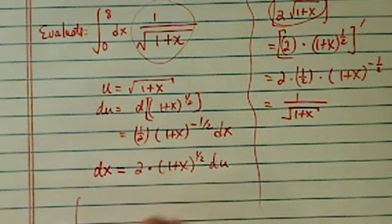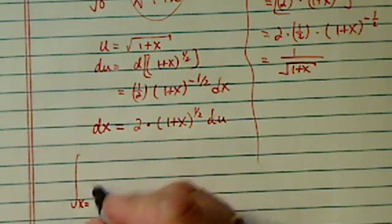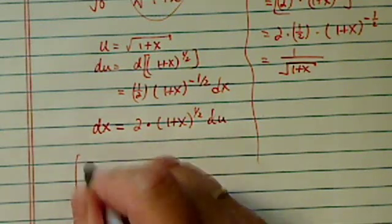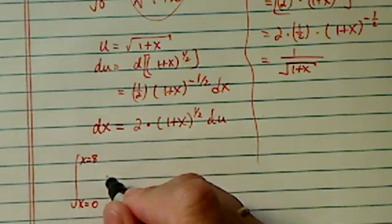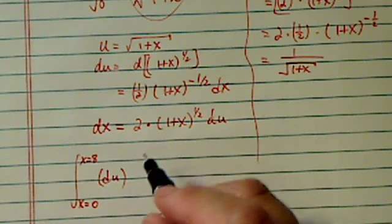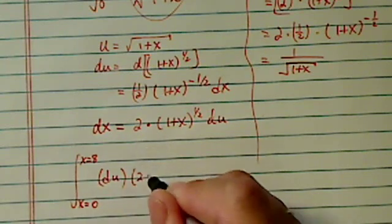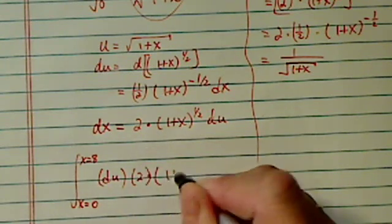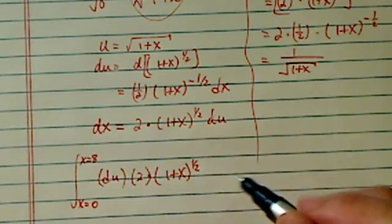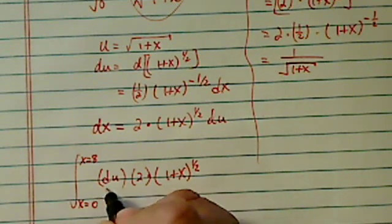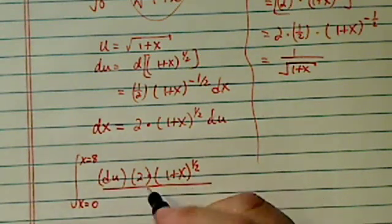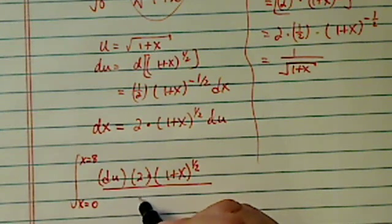I have dx equal to 2 times 1 plus x to the positive half du. Now let's substitute it back in there. Let's be careful with our upper bound and lower bound because the variable is still in the x. x is equal to 0 and x is equal to 8. We're going to change this later on. du, dx is equal to du times 2 times 1 plus x to the half.